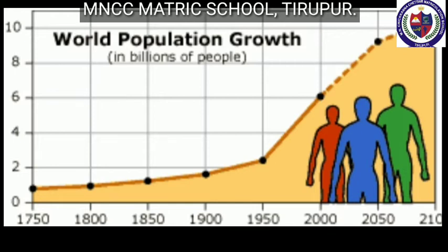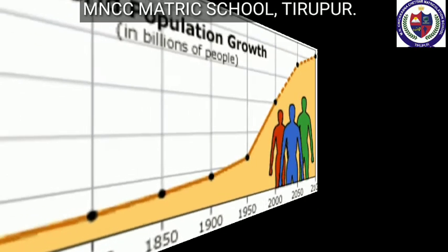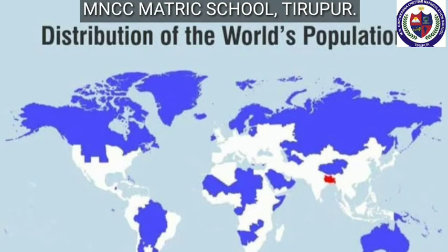Population change refers to an increase or decrease in the population of an area, influenced by the number of births, deaths, and migration. Population growth refers to an increase in the number of people who reside in a particular area during a particular period.